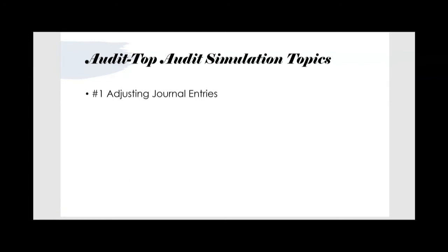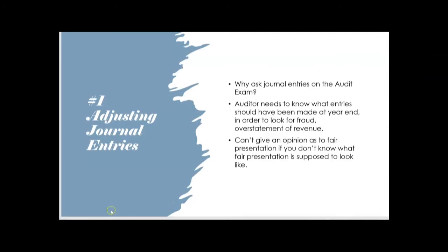You might wonder why journal entries appear on the audit exam — don't they cover that on FAR? Here's the reason: the auditor needs to know what entries should have been made during the year, especially at year-end, in order to look for error or fraud — including overstatement of revenue, which is a huge fraud area. How can you give an opinion on fair presentation if you don't know what fair presentation looks like?